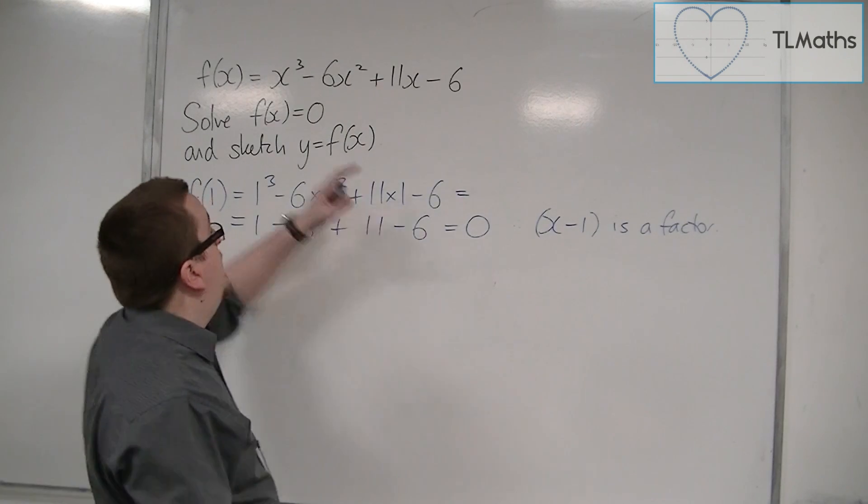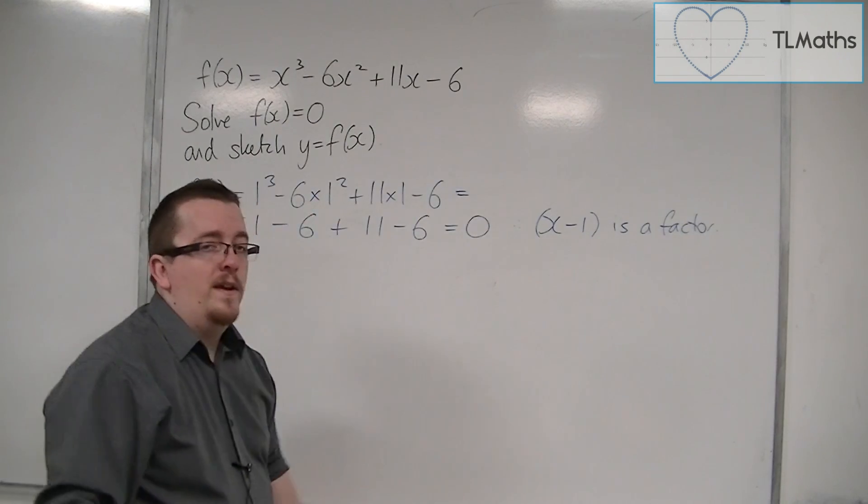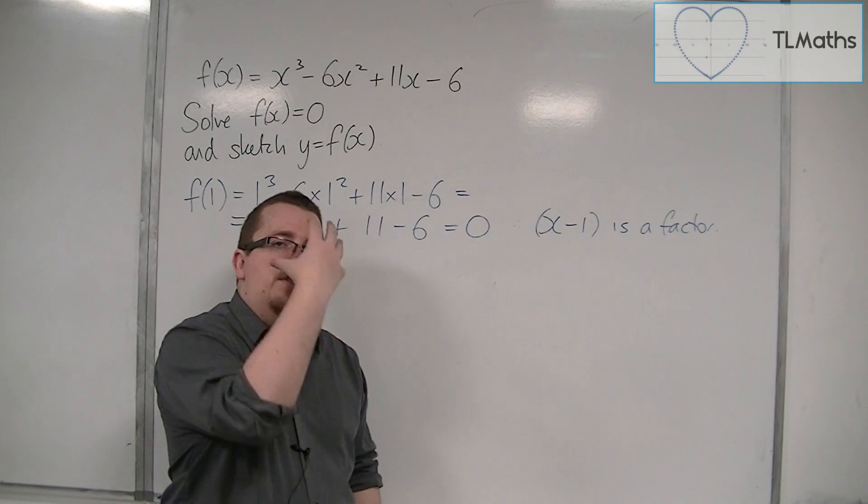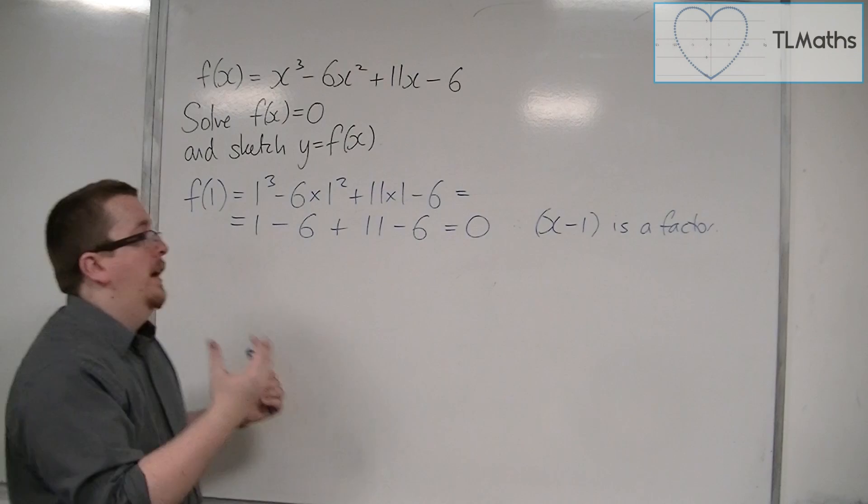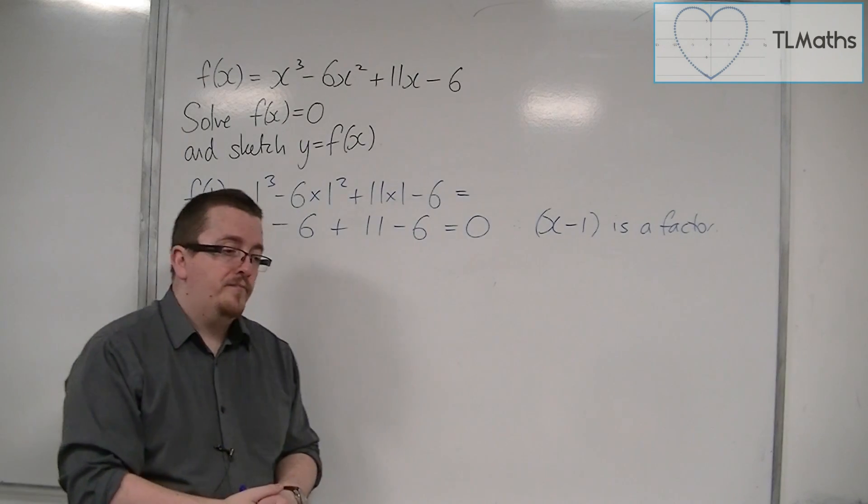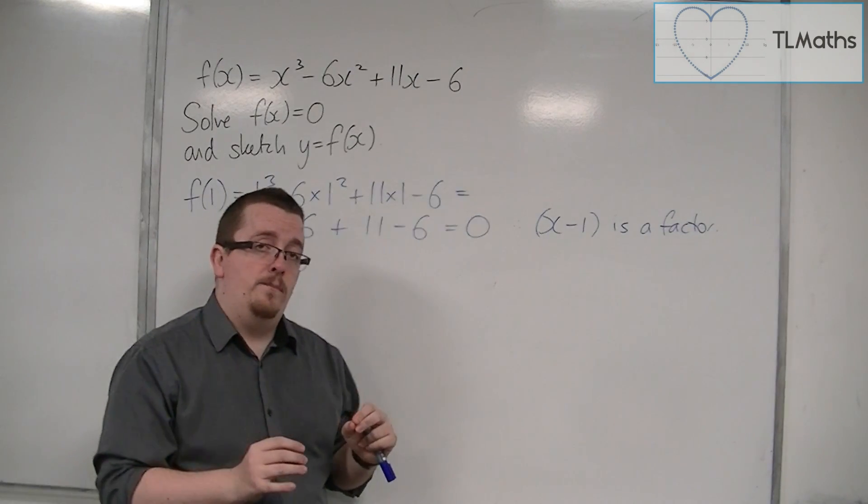So divide this cubic by x minus 1, get a quadratic, factorize it, and make sure that you get to the same answer as the one that we're going to find here. I'm going to continue using the factor theorem.